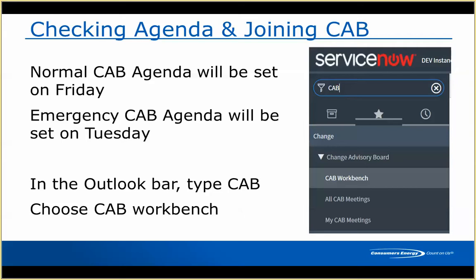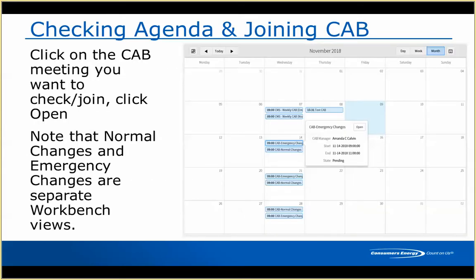Once you click into the CAB Workbench, you'll get a calendar view with all of our CAB meetings listed. This is test data, so ignore some of the weird test entries, but we will have two different CABs — one for normal changes and one for emergency changes. We'll switch halfway through the meeting between workbenches, so you might get an invite for both or just one depending on if you're on the agenda.